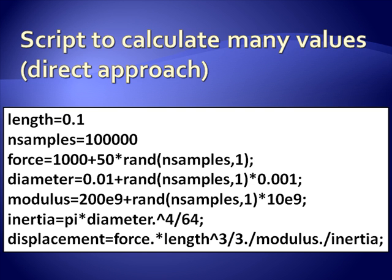Then when I do the displacement, I do the same thing. I use this vector, I use this dot operator, dot times, dot divide twice. And that says do all this element by element. And so this one command gives me 100,000 displacements. A vector of 100,000 displacements randomly distributed according to the assumed random distributions of the inputs.